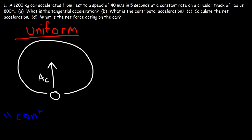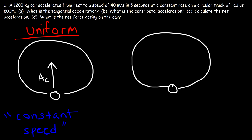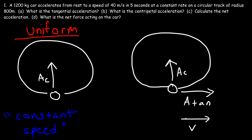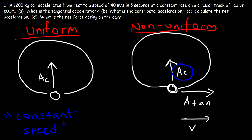Even though the direction is changing continuously, in non-uniform circular motion the speed is not constant. The object is still traveling in a circle, but it's accelerating — or possibly decelerating. So it has not only a centripetal acceleration but also a tangential acceleration, making this non-uniform circular motion where the speed is not constant.